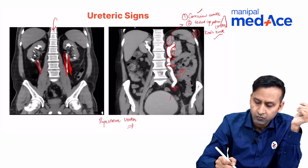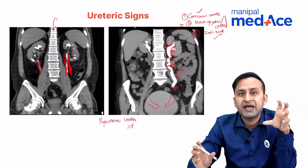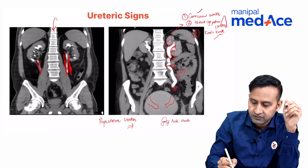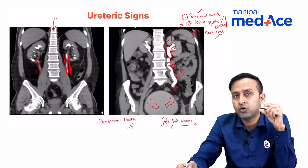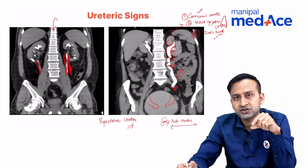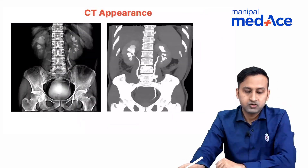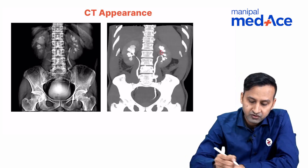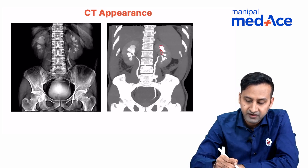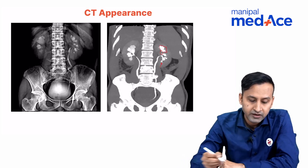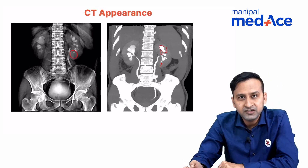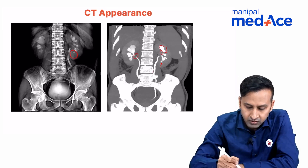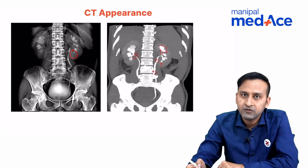Once the ureters open into the urinary bladder, their openings also become abnormal — widened and gaping. This is called golf-hole ureters, representing abnormal openings at the ureterovesical junctions. On CT IVP, you can classically see all the findings: narrowing of the infundibulum, calyceal dilatation, fibrosis at the renal pelvis, and ureteric narrowings. The moth-eaten appearance is not well seen on CT, which is why IVP is the investigation of choice in early stages.